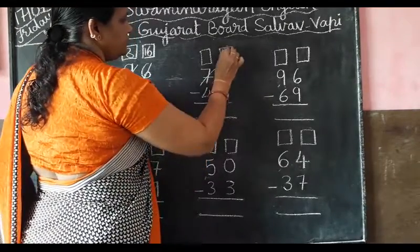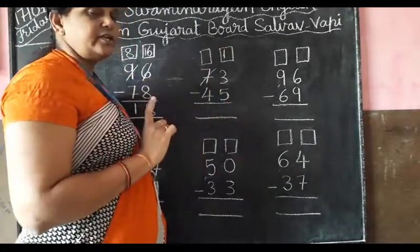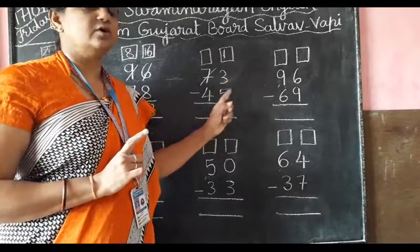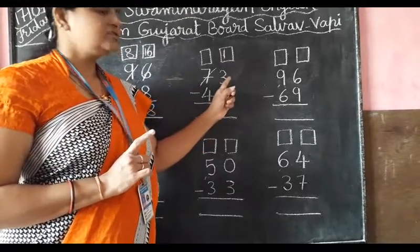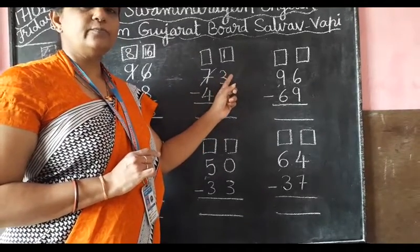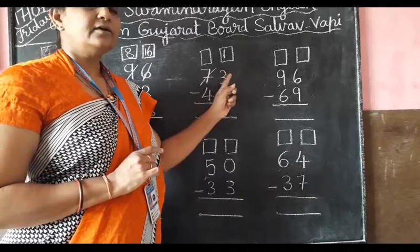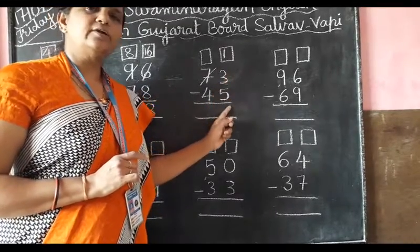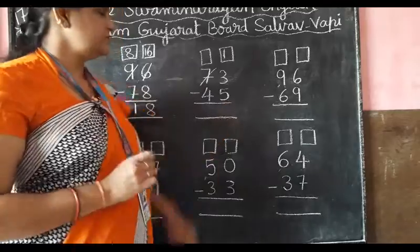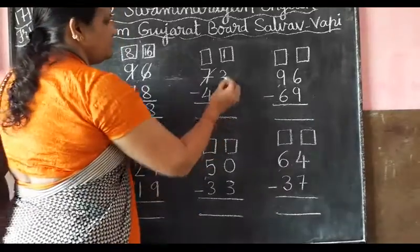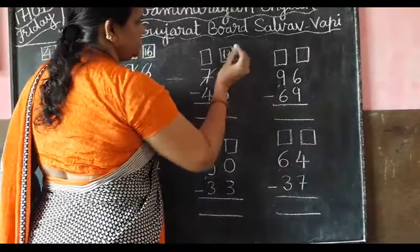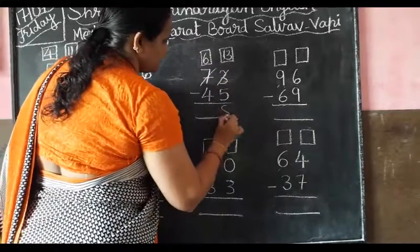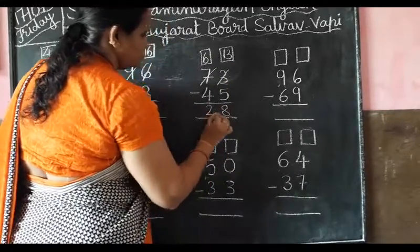From 3, first of all you have to check every time whether the number is big or small. Ya agar small hai upar ka number, toh aapko pehle carry dada. Agar ye baala number bada hai, toh you can cut easily from this. Now 13, 6, 5, 2.